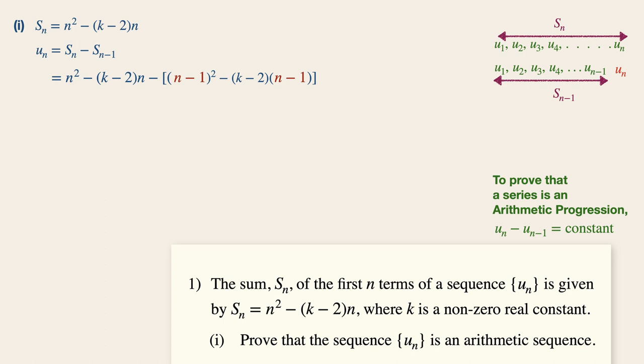Now simplifying further, we will then have n squared minus kn plus 2n minus n squared minus 2n plus 1 minus kn plus 2n plus k minus 2. Now we will then have 2n plus 1 minus k.